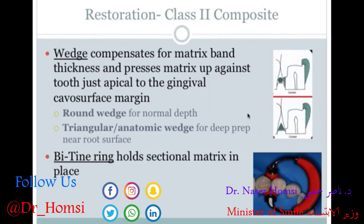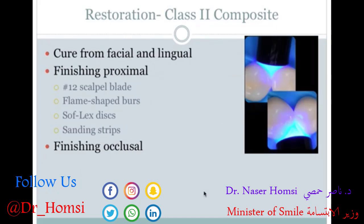As a general rule, use one wedge if the matrix band passes through one contact — such as for an MO or DO preparation — and use two wedges if the band passes through two surfaces, as in an MOD. There's also the sectional matrix system, which can be used for composites using clear plastic strips and a ring to hold everything in place.